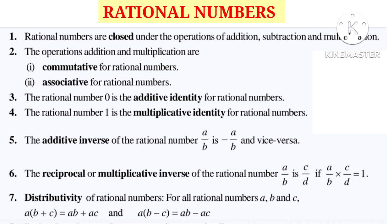Rational Numbers are closed under the operations of addition, subtraction and multiplication. The operations addition and multiplication are commutative for Rational Numbers.